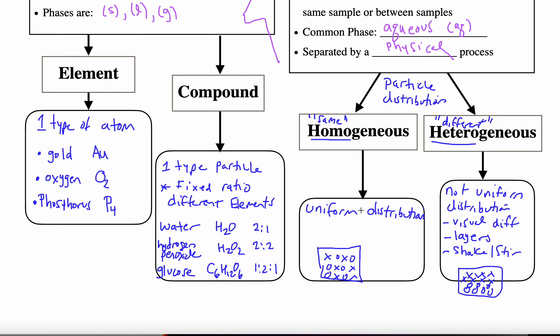An example of a homogenous mixture, one I can't live without, would be like coffee or a sports drink. Where my favorite heterogeneous mixture, you can see the layers, an example would be like pizza.